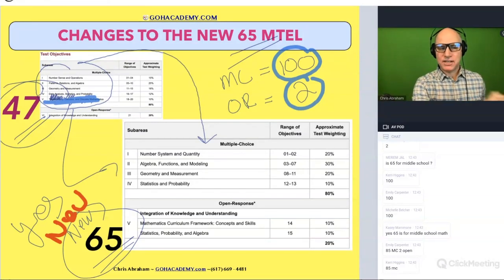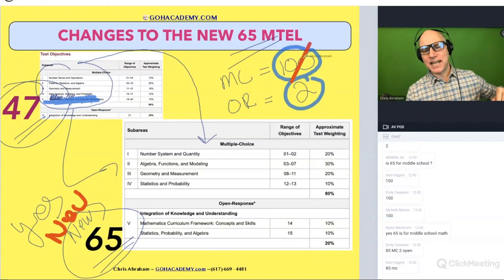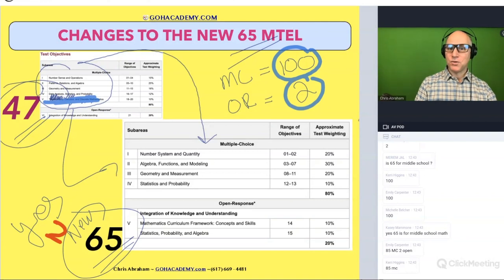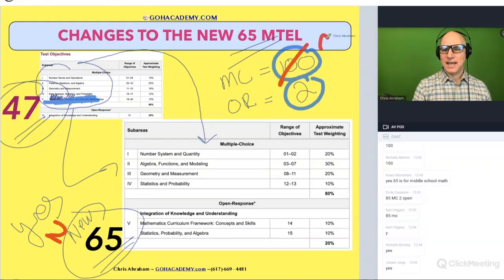So what happened this spring is that they changed it again, and I've never seen this before. I've never seen them change a new exam that just came out. Right? They changed it to 85 questions and two essays. Is that correct, team? So the new new 65 has 85 multiple choice and two essays.